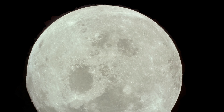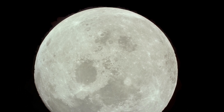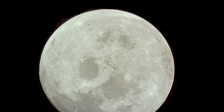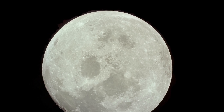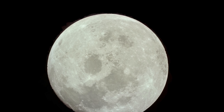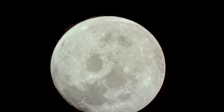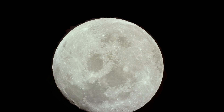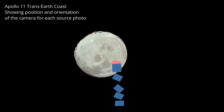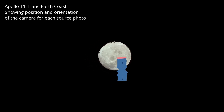Here's the one that really amazed me. This model was made from a set of eight photos taken after trans-Earth injection — after the spacecraft has performed a burn to leave lunar orbit and return to Earth. This sequence starts at about 1,000 miles from the moon and extends out to about 10,000 miles, giving us a really good view of what it was like to leave the moon and return to Earth and see the moon receding in the distance.